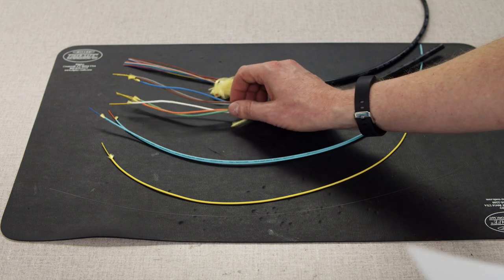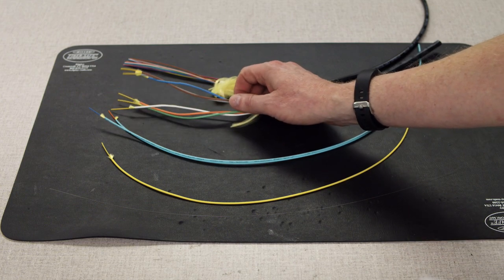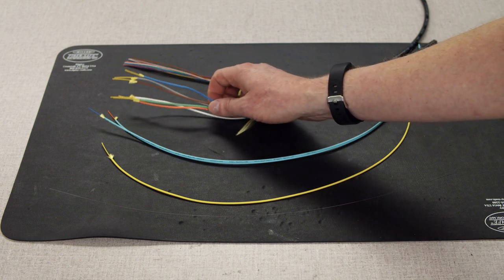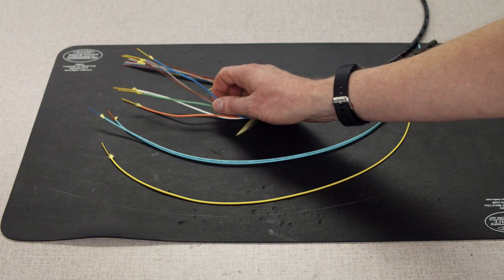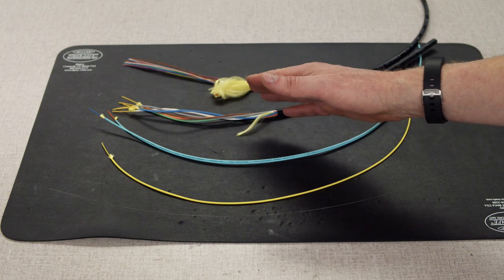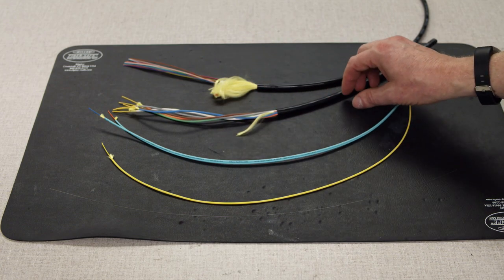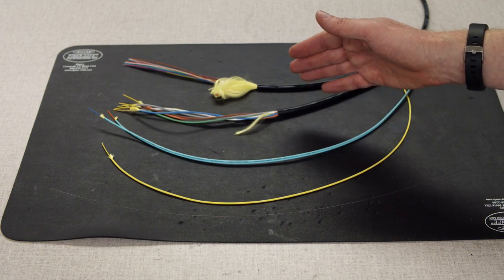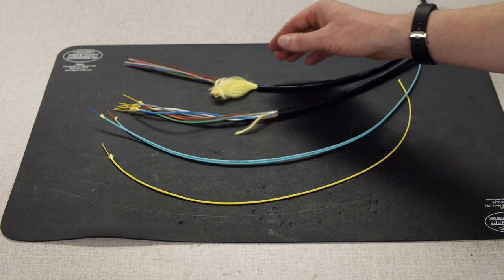This one here is called a breakout cable because the individual fibers can be broken out into individual fully jacketed fiber cables at the ends. This style of multi fiber cable is very robust but it also is quite bulky. So for longer runs some sort of distribution cable is used.